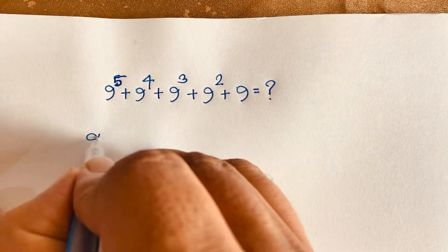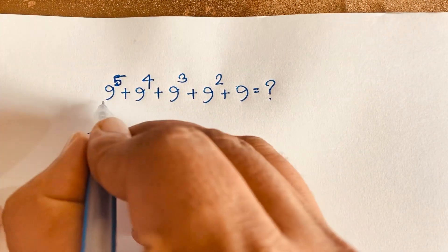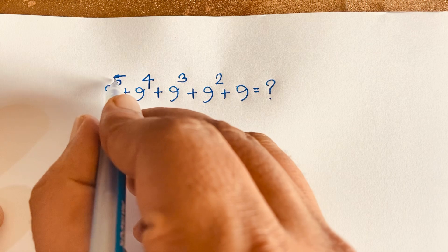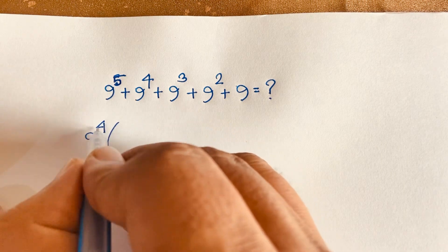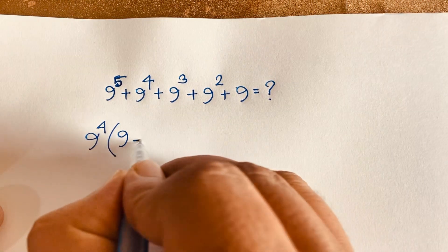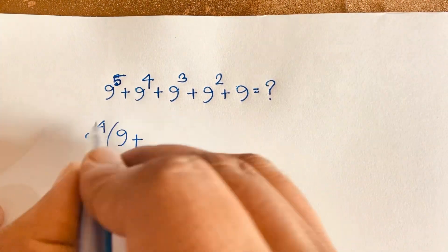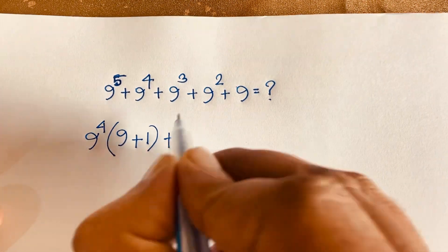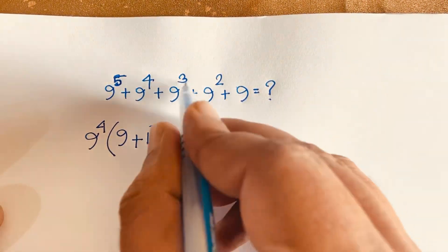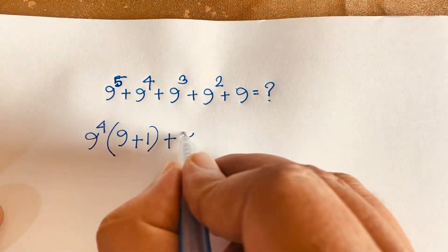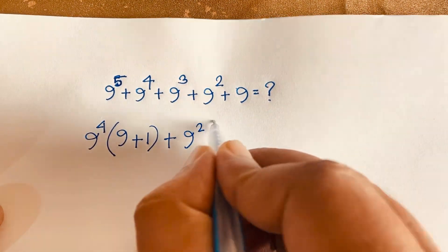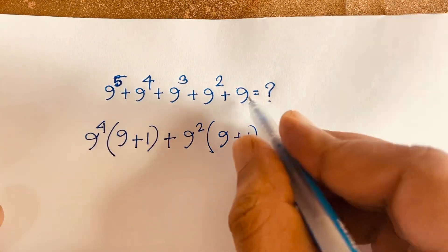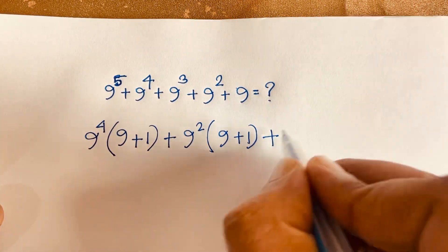In this expression, 9 to the power 4 is common. So 9 to the power 5 divided by 9 to the power 4 gives 9, and dividing the next term gives 1. If I take 9 to the power 2 as common, it will be 9 plus 1.